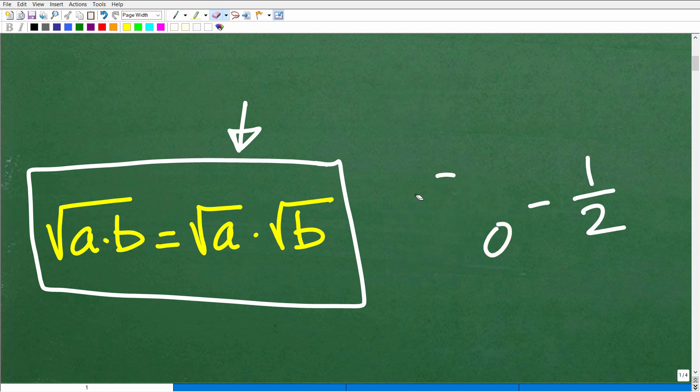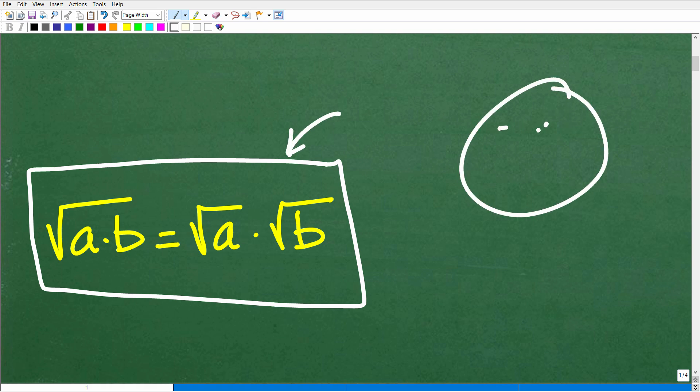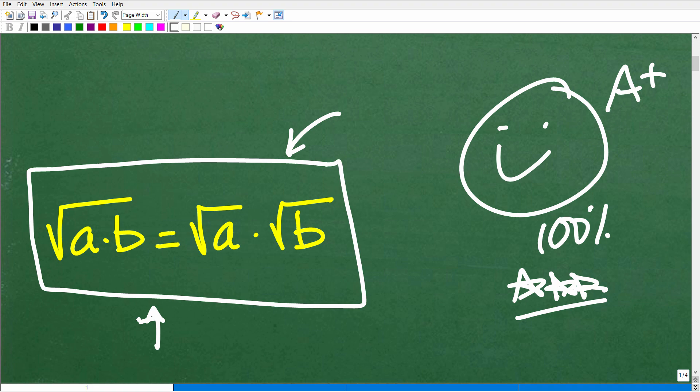But if you knew this already, let's celebrate your knowledge of square roots by giving you a nice little happy face and A plus, a 100% and multiple stars. So you can tell your friends and family that indeed you understand how to simplify square roots using this property here and knowledge of what we call perfect squares.